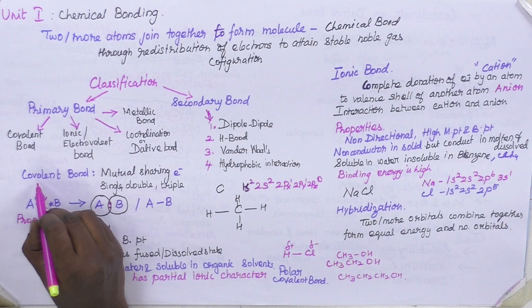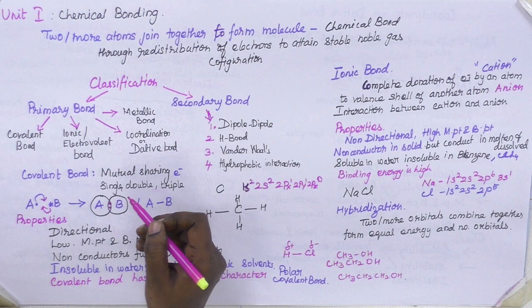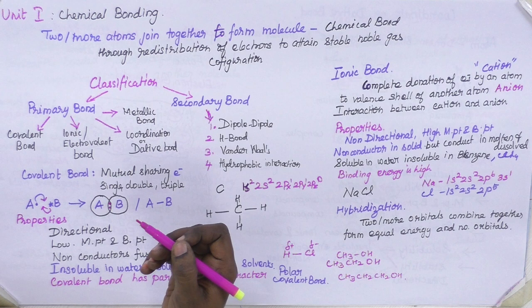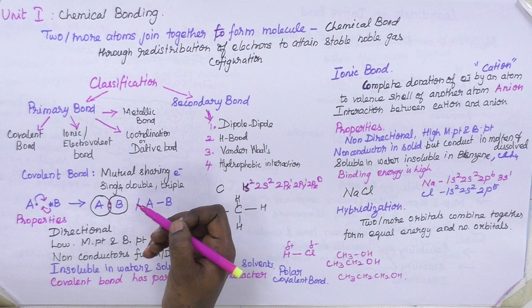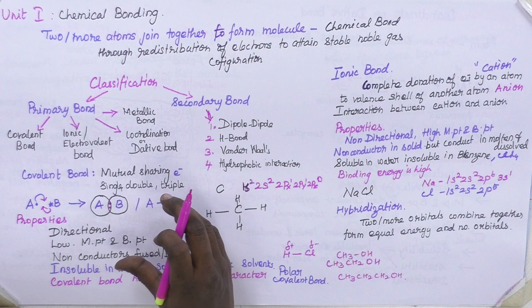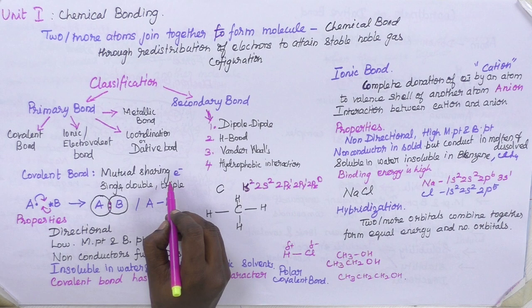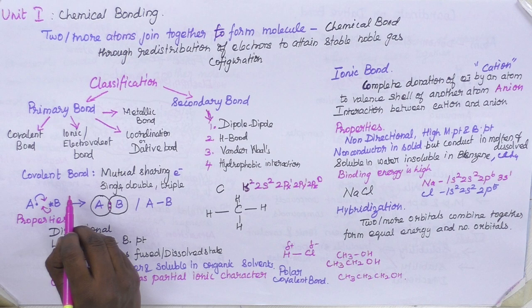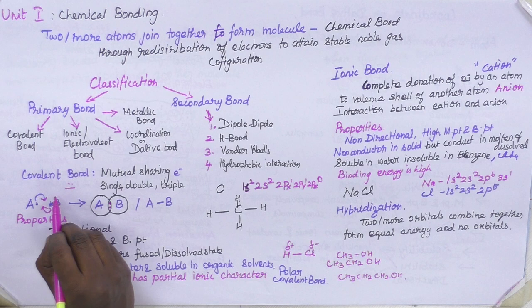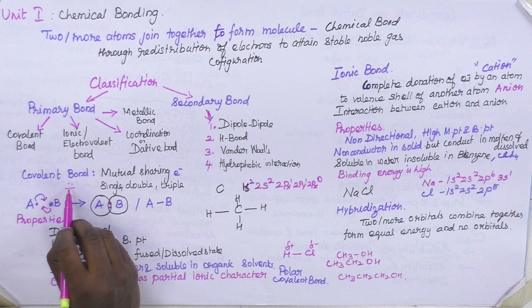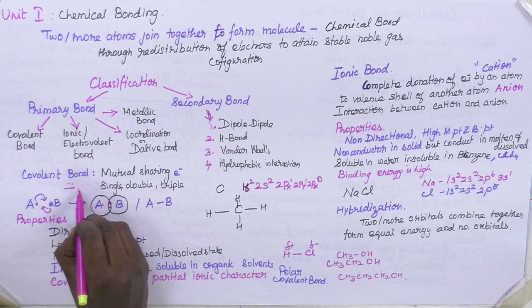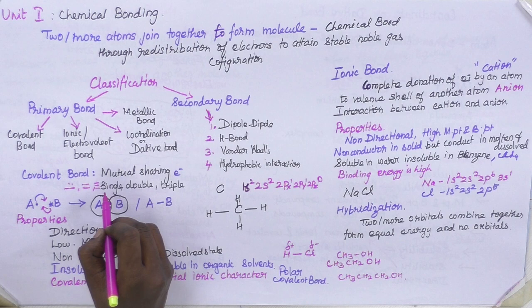Let me first explain what a covalent bond is — its definition, properties, and covalent nature. A covalent bond is a mutual sharing of electrons. If you have atoms A and B, we need two electrons for bond formation. These two electrons are donated equally by both atoms, then it is called a covalent bond. It may be a single bond, double bond, or triple bond — so three types of covalent bonds exist.